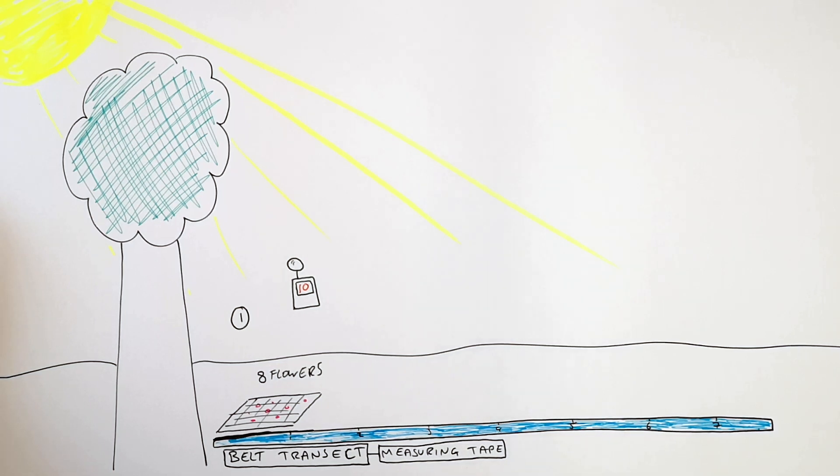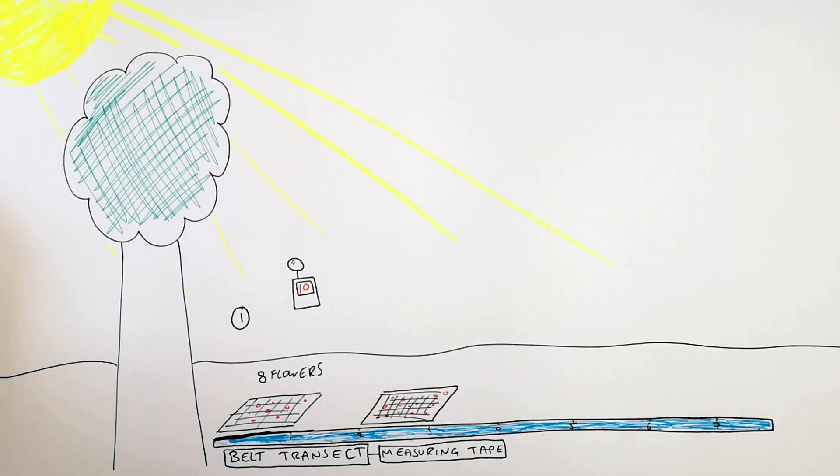You then lay your quadrat at regular intervals, in this case every 2 metres. So we now lay the quadrat 1 metre away from the previous one. Then measure the abiotic factor which is light intensity. In this case we have a light intensity of 20. Then count the total number of flowers in the quadrat, in this case there are 15 flowers.